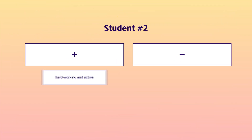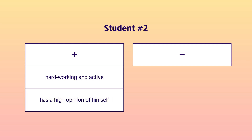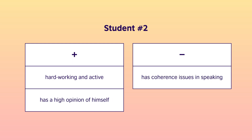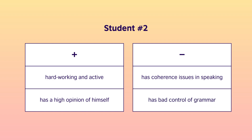Alright, let's move on to student number two. This student is very hardworking and active. He has quite a high opinion of himself and thinks he's headed for a great score. However, there are serious coherence issues in his speaking, which are only made worse by his bad control of grammar. This has to do both with accuracy and range. What can you do to help him? Please write your ideas down.